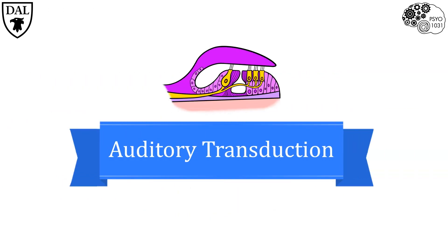Taken together, the outer, middle, and inner compartments of the ear allow for the amplification and transduction of sound waves that travel through our auditory worlds into usable neural signals, which eventually travel to our brains to be perceived and interpreted.